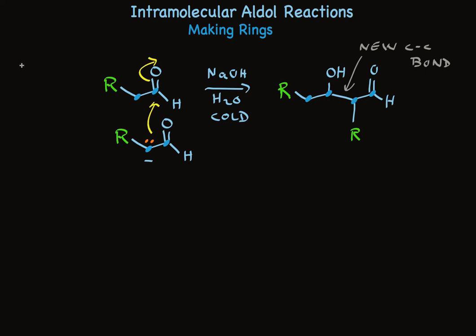Now here's an interesting thought. What if those two R groups were tied together? You would have a di-aldehyde as a starting material, and the product would be a cyclic hydroxy aldehyde. This turns out to be a good way to make rings. There aren't that many good ways to make rings, so this is really important.